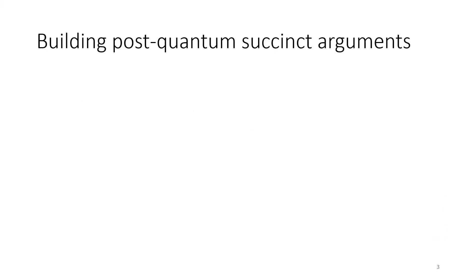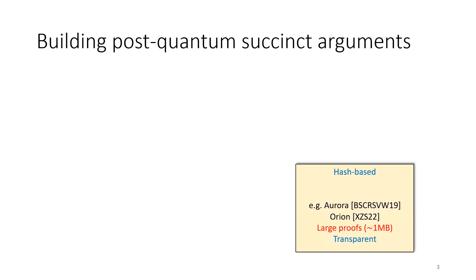Let's look at the landscape of post-quantum succinct arguments. First, there are hash-based arguments, which are nice in that they have a transparent setup and only rely on the security of your favorite hash function. But in practice they have somewhat large proof sizes, which has led people to seek other approaches.